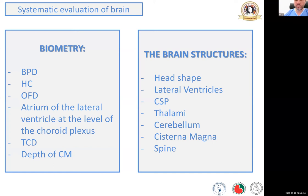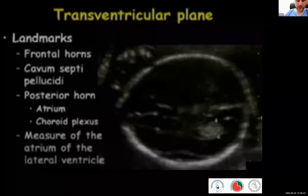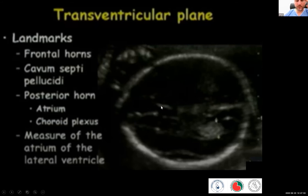Apart from just doing the biometry, we can have a direct vision of the head shape to see if this head looks as we would expect it to be. For the lateral ventricles, apart from just measuring the width, if they look normal, we also check the rest of the fetal brain structures such as the cavum septum pellucidum, the thalami, the cerebellum, the cisterna magna, and of course the fetal spine. Through the ventricles plane, we are able to see the frontal horns, the cavum septum pellucidum, and check the posterior horn and choroid plexus and measure the length of the atrium.